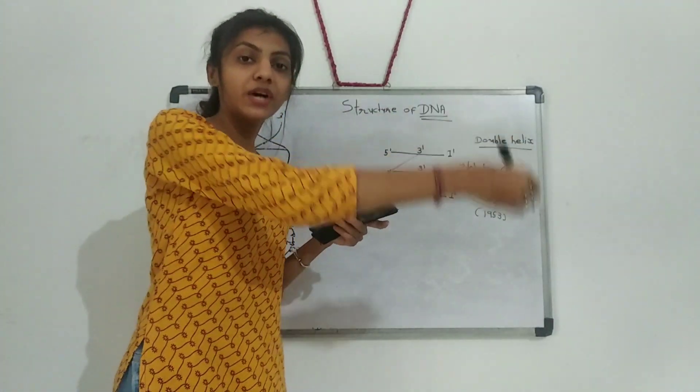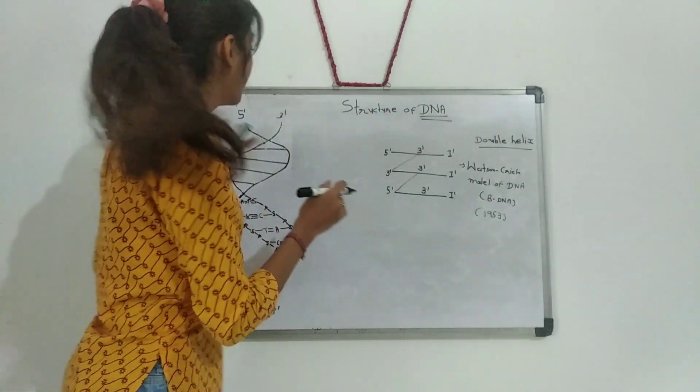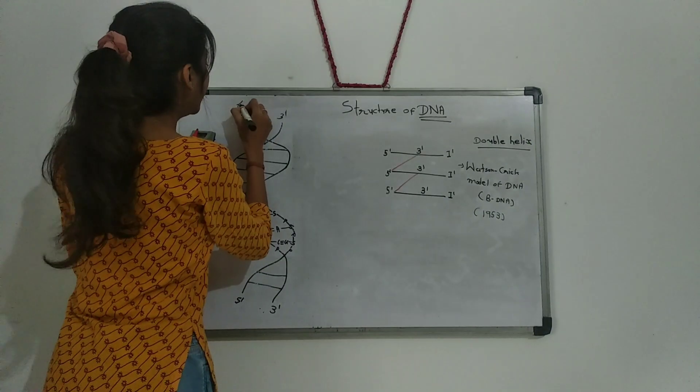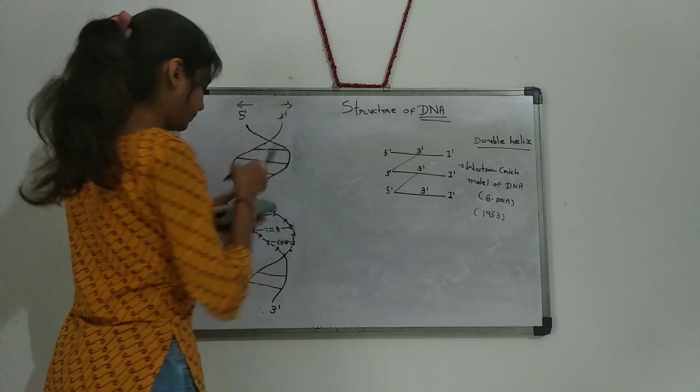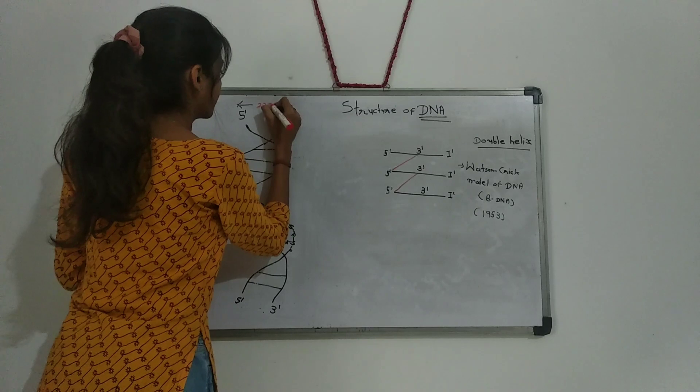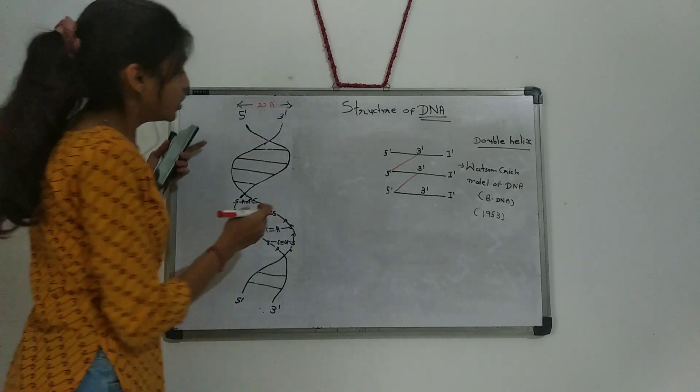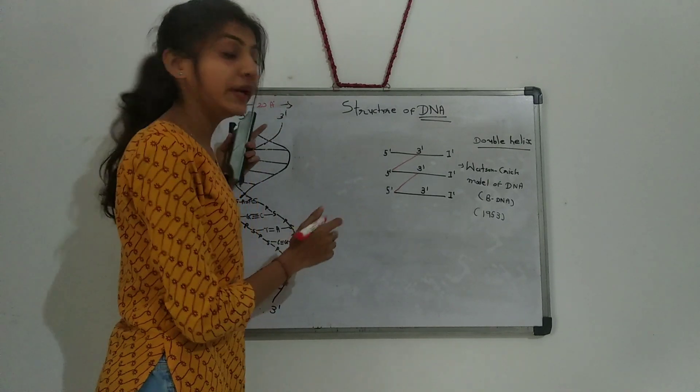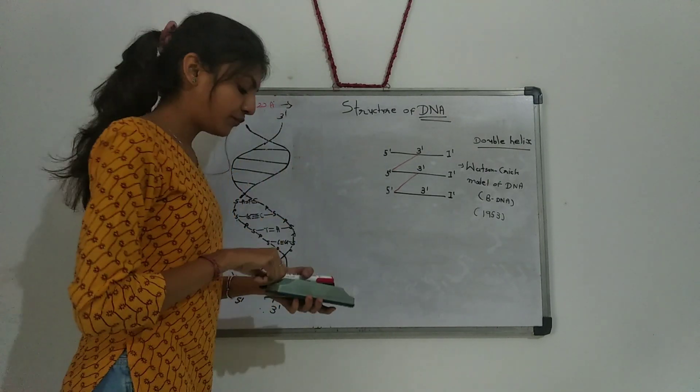The double helix is 20 angstrom. The helix has one complete turn of 34 angstrom.